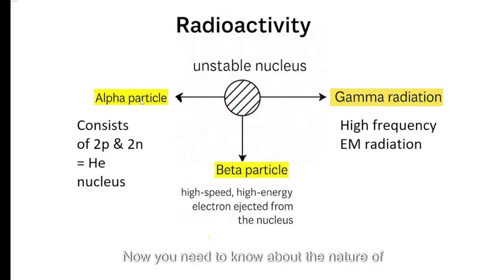Now you need to know about the nature of these things. Alpha particles consist of two protons and two neutrons. So alpha particle, two neutrons and two protons. Now this is identical to a helium nucleus.